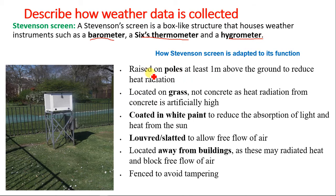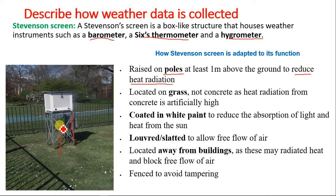How the Stevenson Screen is adapted to its functions: it is raised on poles — it is not kept on the ground surface or the concrete floor. It is raised at least one meter above ground level, and the importance of this is that it helps to reduce heat radiation so that heat radiation from the soil will not affect the readings inside. It is also located on grass, not concrete, as heat radiation from concrete is artificially higher than that from grass.